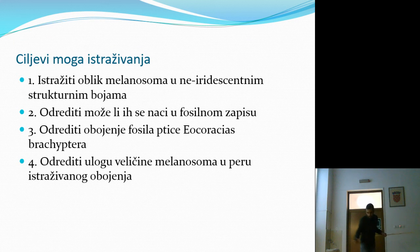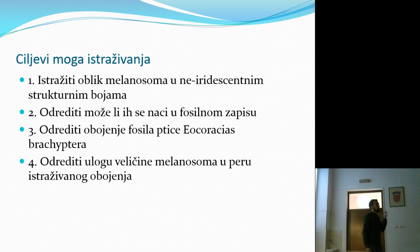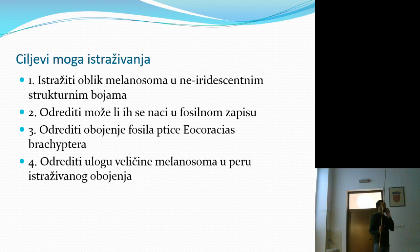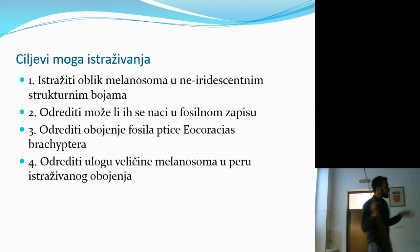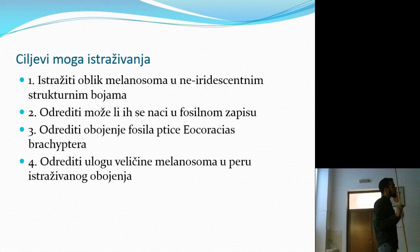Sada prelazim na dio koji je bio moj diplomski rad. Što mene zanima? Neiridescentne strukturne boje - boje koje su strukturne, melanosomi su tu, bez melanosoma nema boje, ali oni ne sudjeluju direktno u proizvodnji te boje. To su generalno plave i, u kombinaciji sa žutom bojom, zelene boje. Htio sam odrediti mogu li ih se naći u fosilnom zapisu, odrediti obojenje fosila zanimljive ptice iz nalazišta Messel u Njemačkoj, te istražiti funkciju tih melanosoma.